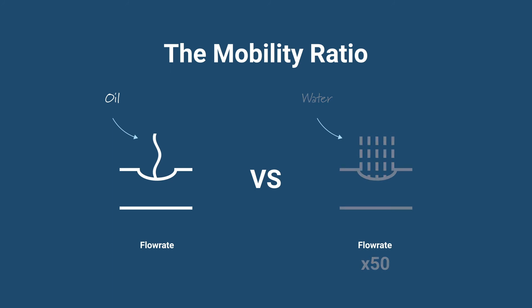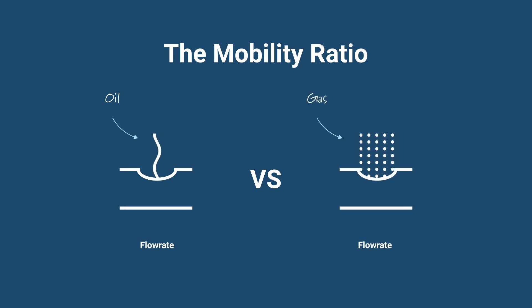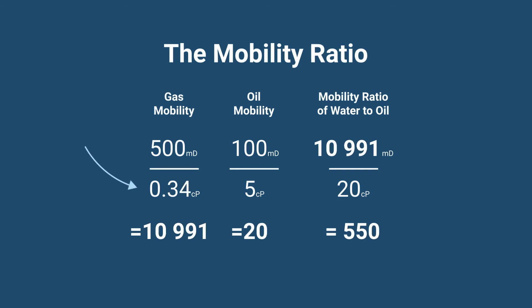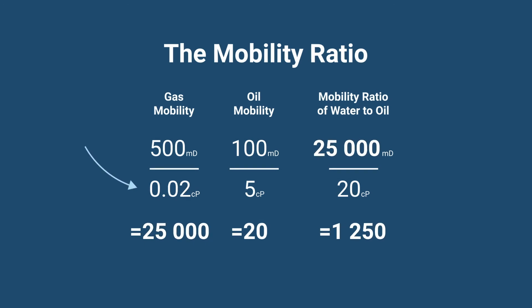Now let's take a quick look at a mobility ratio example of gas to oil. Using a typical gas viscosity of 0.02 centipoise, the gas flow rate can become 1250 times larger than the flow rate of the same medium oil.